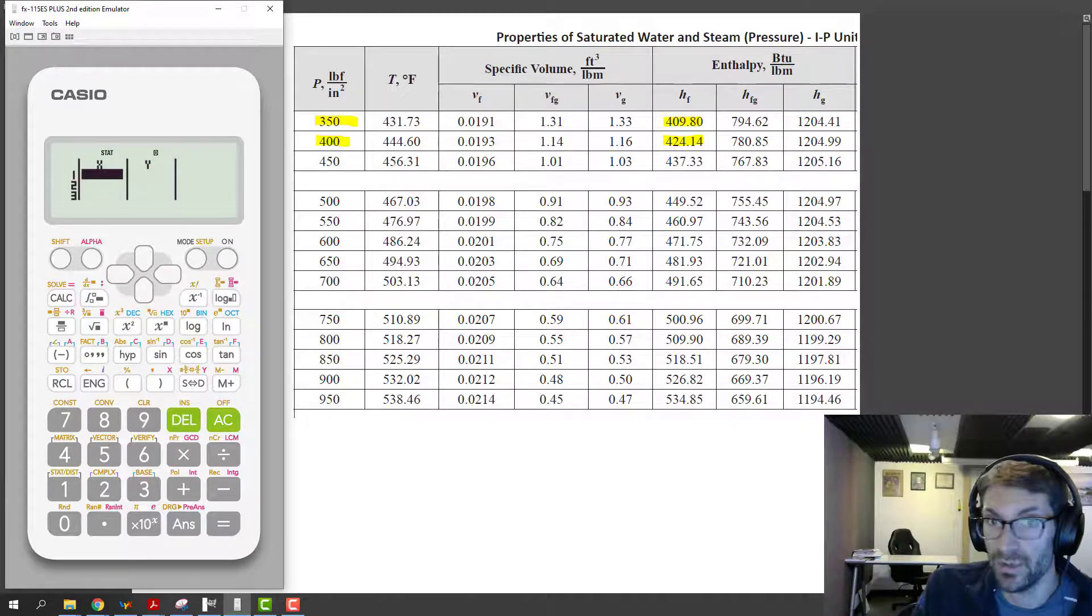So we're going to choose option 2, a plus bx, which is the equation of a line, and then we're literally just going to make a small table with these two data points where our point is in between the two.